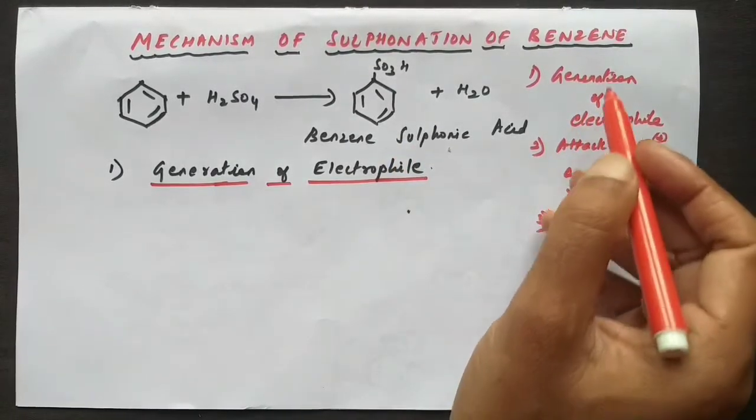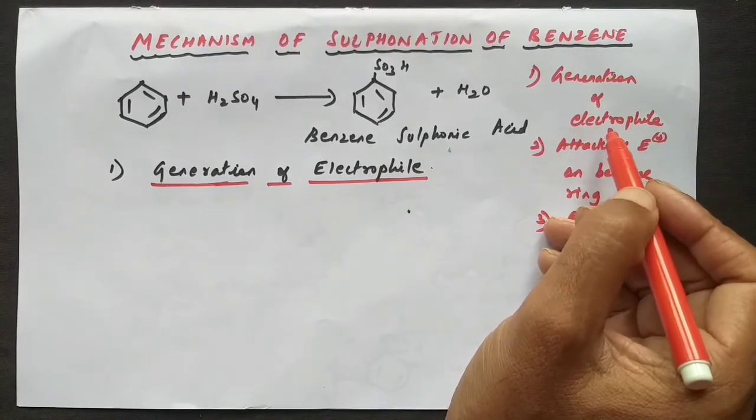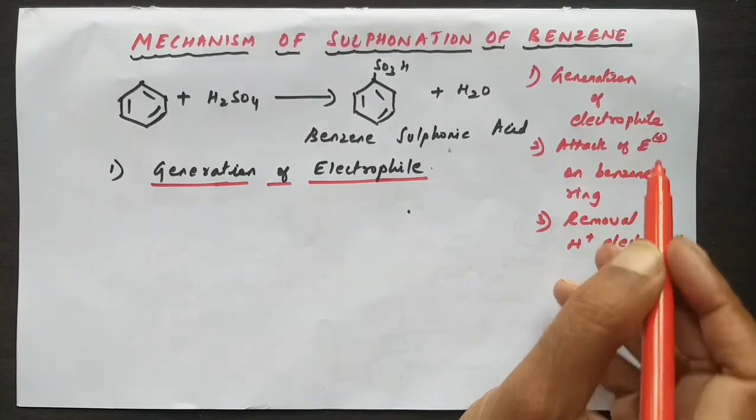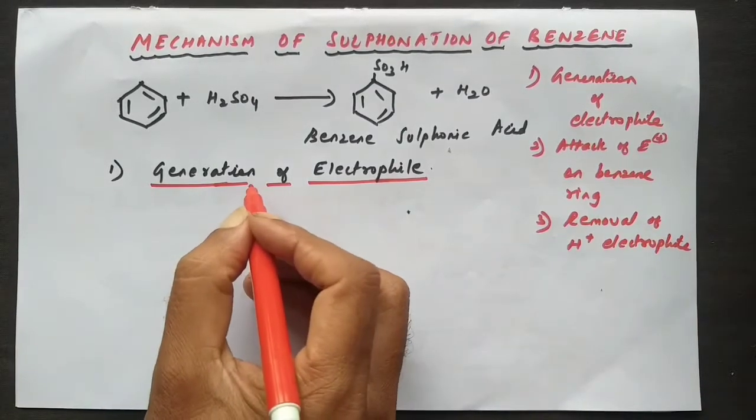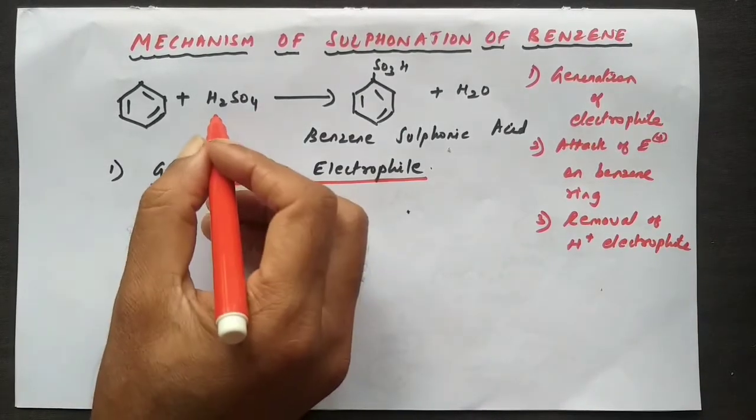We can make it in three steps. First will be generation of the electrophile, second will be attack of electrophile, and third will be removal of H+. So first step will be the generation of electrophile.